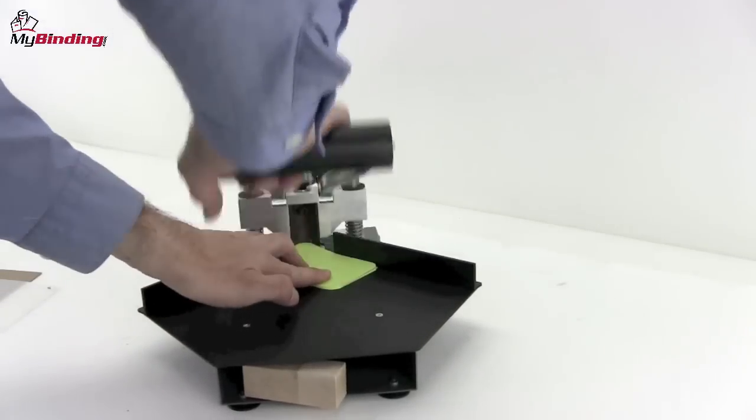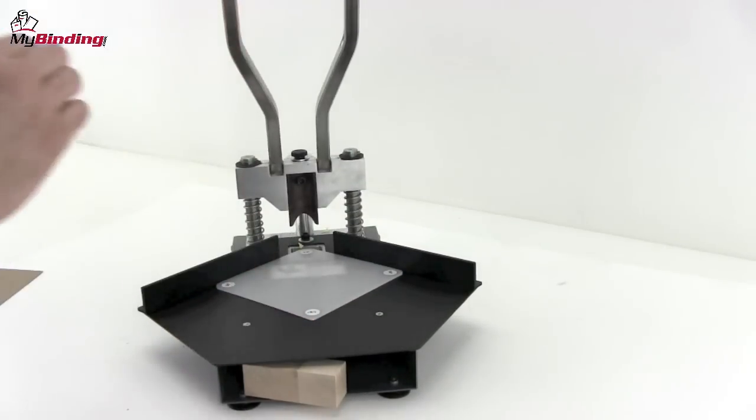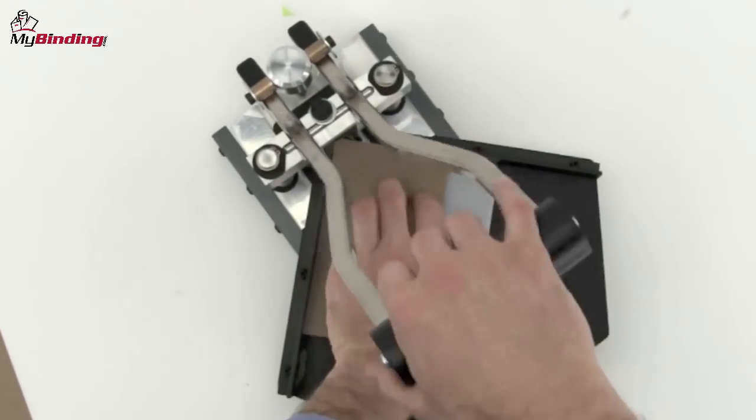The die is extremely sharp and very precise. Also included in the machine is a plastic base for the different size dies that are created for this machine. This goes underneath your project for the cleanest of cuts.